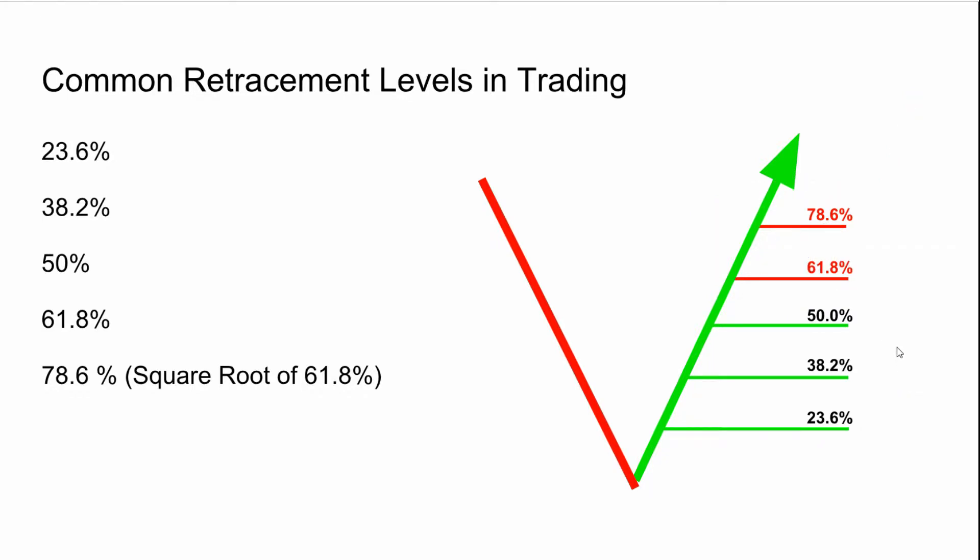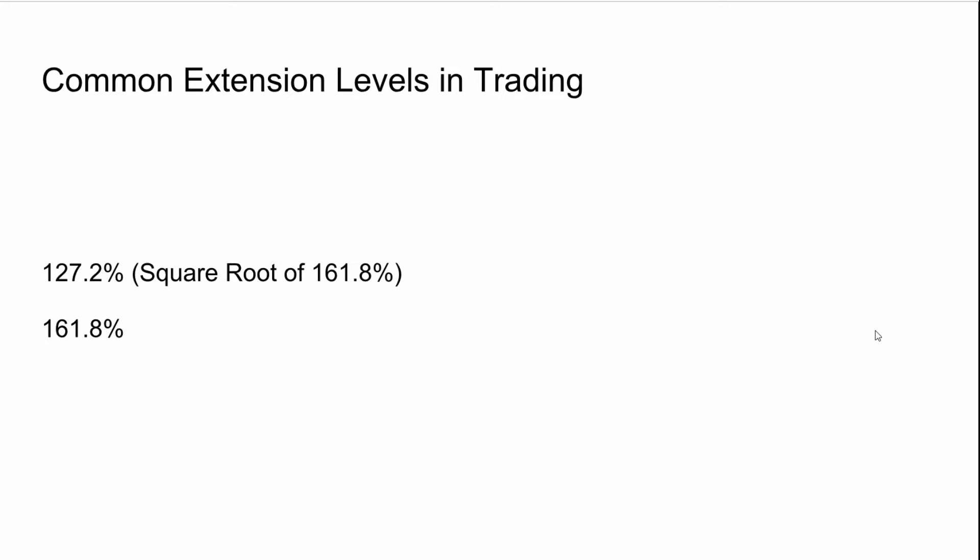Usually the zone between 61.8% and 78.6% is where we decide if the stock is going to break out and continue up or break down. A lot of times the stock is going to turn around around that 61.8% retracement. If it does break out above the 61.8% or 78.6% retracement, there's a very good chance it's going to continue up to the 1.272 extension.